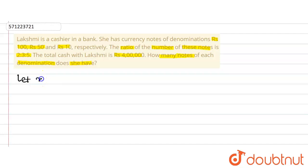So number of rupees 100 notes be 2x because the ratio is 2 ratio 3 ratio 5. We are just taking x to be the common multiple.